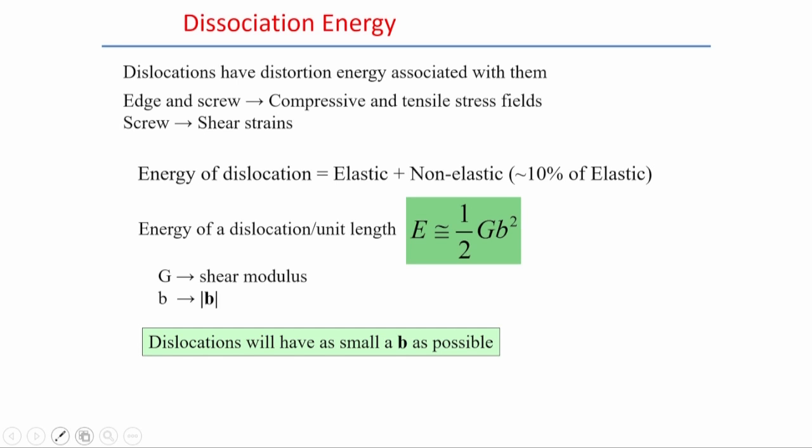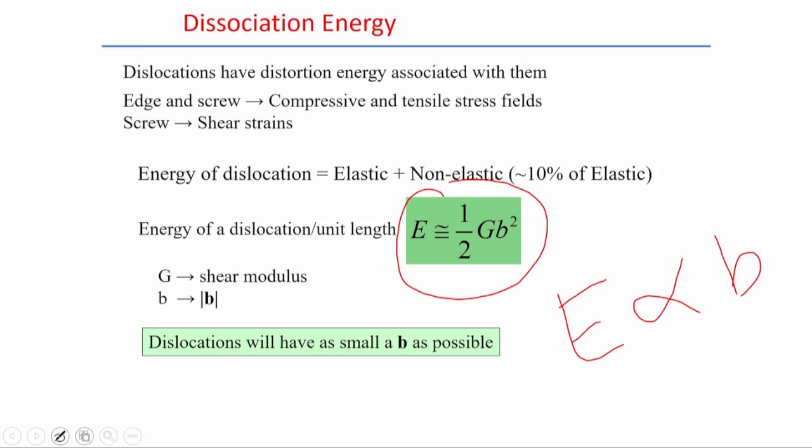Dislocation energy is divided into two components: elastic and non-elastic. The non-elastic energy exists within the core of the dislocation, and that core energy is around 10% of the elastic energy. In general, we represent the energy of a dislocation per unit length as E = ½Gb², where b is the Burgers vector and G is the shear modulus. Dislocations always tend to have the smallest possible Burgers vector.